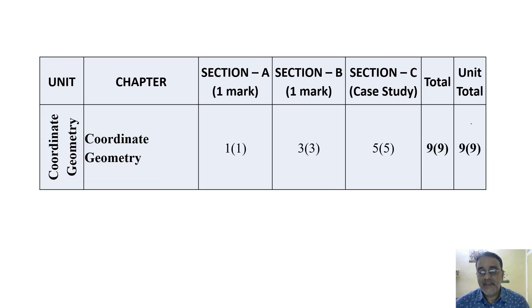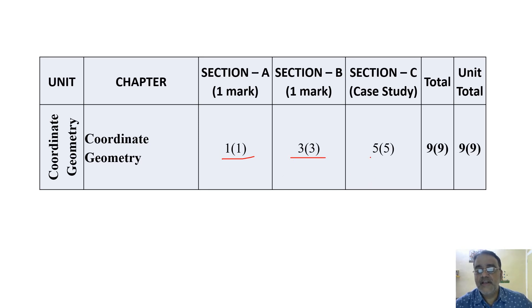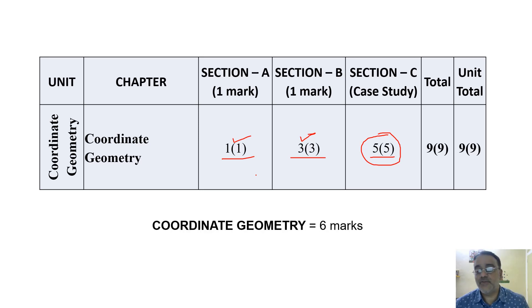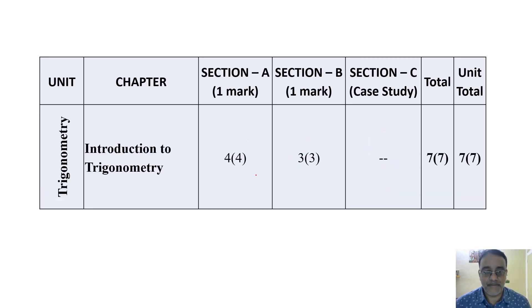Coordinate Geometry is a very easy chapter with only two sections: Distance Formula and Section Formula. There are nine questions — one question in Section A, three in Section B, and one case study (attempt four). Since there's a choice, a student can attempt eight questions from Coordinate Geometry, scoring eight marks. The unit weightage is only six marks, making this a very scoring chapter.